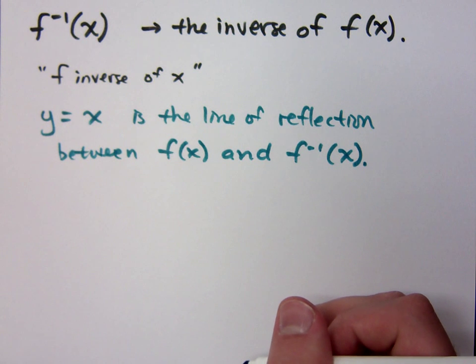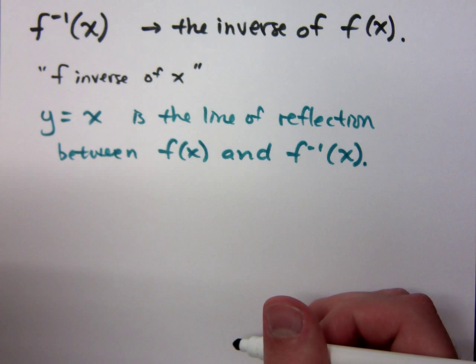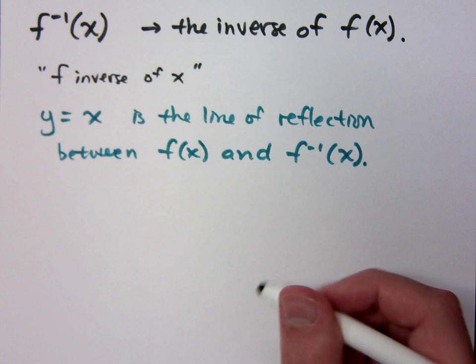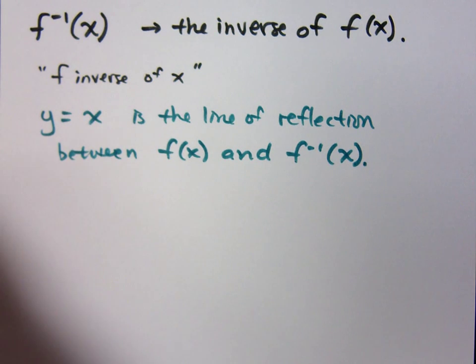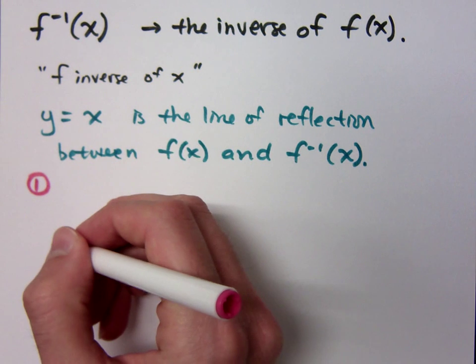So if you could graph two guys, and you could graph y equals x, and you could see it reflected across that, then those guys would be inverses. I'm going to show you how you can, the steps for actually getting an inverse, and the steps are pretty simple.